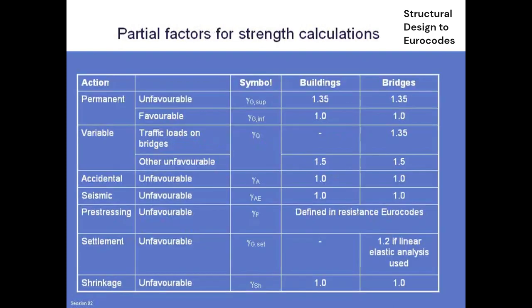These are the partial factors — the default recommended values. For variable actions, traffic has a gamma factor of 1.35; temperature and wind have 1.5. The Eurocode recommended position, adopted by most countries, is that all dead loads have 1.35. In the UK, however, we've tweaked them back toward where they were before. 1.35 was considered too onerous for steel — particularly for light structures like steel orthotropic box girders, where a gamma factor of 1.35 completely defeats the purpose of going for a light structure. So the steel dead load factor has been reduced back to a value more akin to BD37.